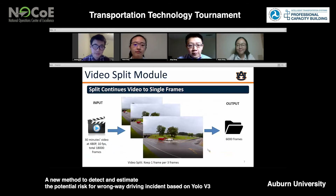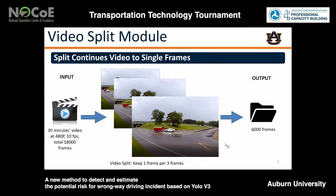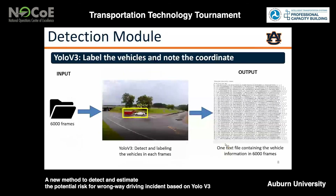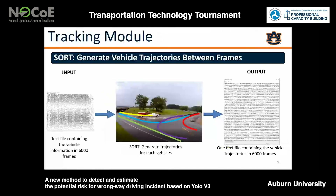First, we split the videos into multiple frames. Then we conduct YOLO3, which is the object detection algorithm, to extract the coordinates of each vehicle in each frame. Then we apply the SORT algorithm to extract the trajectory of each vehicle and cluster them into several groups. For each group, we can generate a representative trajectory, just like the lines shown in the picture marked by different colors.